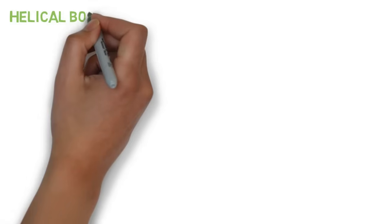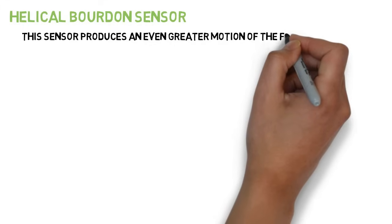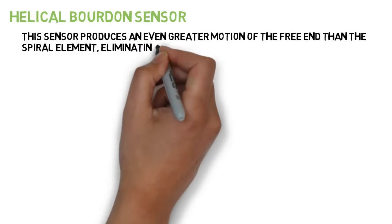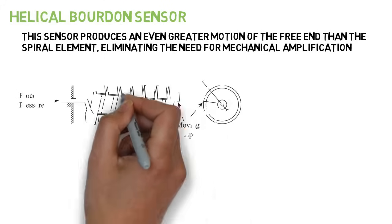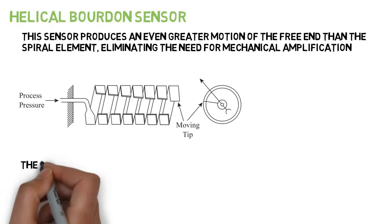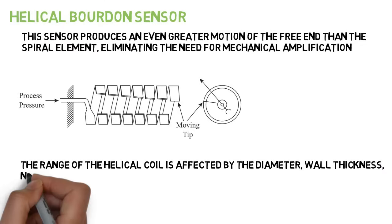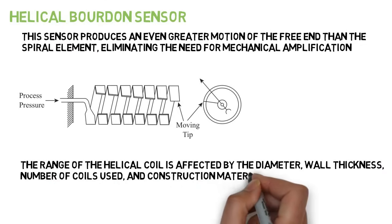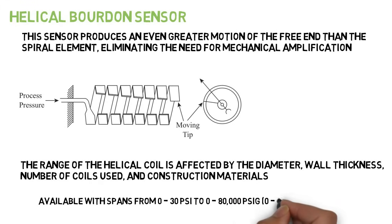Helical Bourdon pressure sensor. This sensor produces an even greater motion of the free end than the spiral element, eliminating the need for mechanical amplification. The range of the helical coil is affected by the diameter, wall thickness, number of coils used, and construction materials. High pressure elements might have as many as 20 coils, while low span sensors can have only two or three coils. Helical elements are available with spans from 0 to 30 psi to 0 to 80,000 psi.